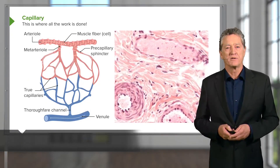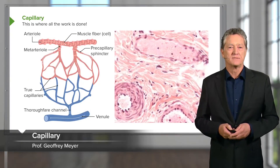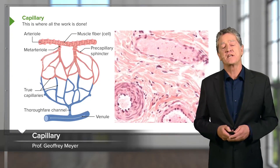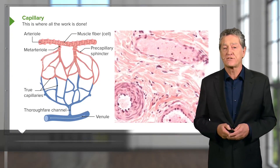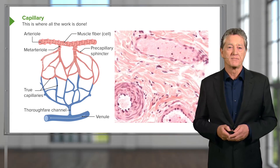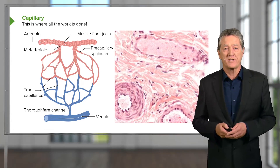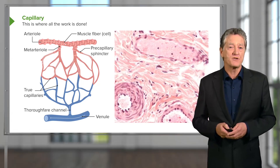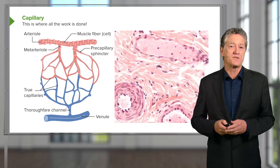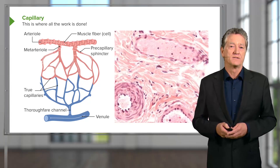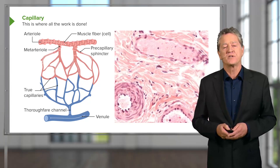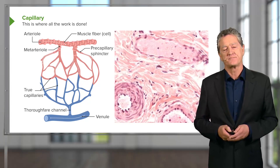Let's have a look at a capillary bed. Capillaries are very, very hard to see when you look at sections of tissue because they're under very low pressure, if any pressure at all, and they collapse down, so they're almost impossible to see.